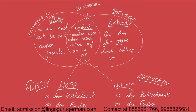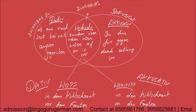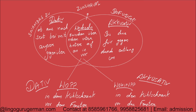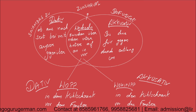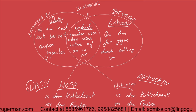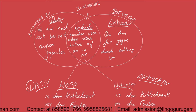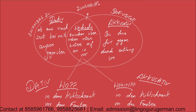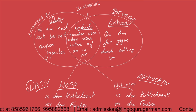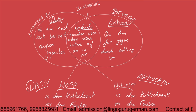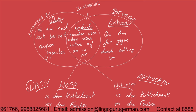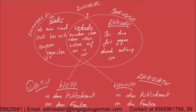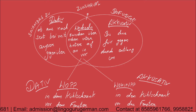Whenever we talk about wechsel prepositions, we need to keep two things in mind. First, is there any movement — any change of position or change of location? If something moves from place A to place B, it is accusative. For example, I am keeping the pen on the table. The first position of the pen was in my hand; now I am placing it on the table. Whenever there is a change of position, we use these prepositions as accusative. If there is no change of position, we use them as dative.